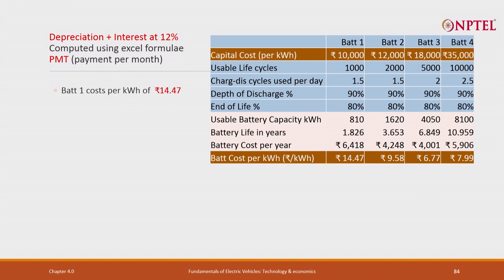7 rupees per kilowatt hour is not really bad. Add 5 rupees for electricity cost — that is 12 rupees per kilowatt hour total. And 1 kilowatt hour gives you about 8 kilometers in a car, so we are talking about roughly 1 rupee 50 per kilometer, including the cost of the battery. That is very low compared to petrol. But if you end up choosing the wrong battery — which we very often do because we have not thought through the interest rate — we get hurt.